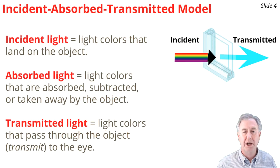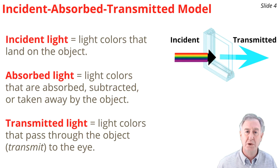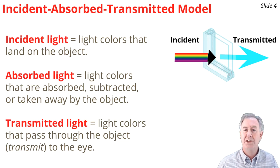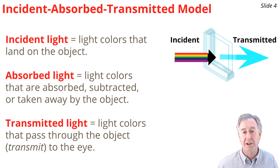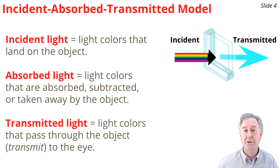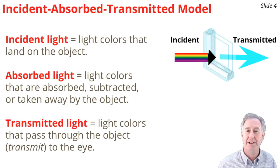Colored filters are transparent objects. In order to understand them, we need to apply the incident-absorbed-transmitted model. You might be used to this being called the incident-absorbed-reflected model, but since we have transparent objects, we replace the word reflected with transmitted. Incident means the light colors that shine on the object. Absorbed refers to the light colors taken away from the incident light. Transmission refers to the light colors that pass through the object — that's what comes to your eye and determines the color appearance of the object.